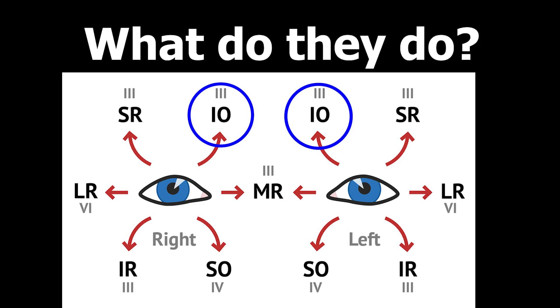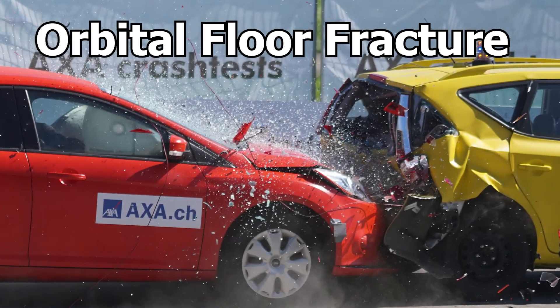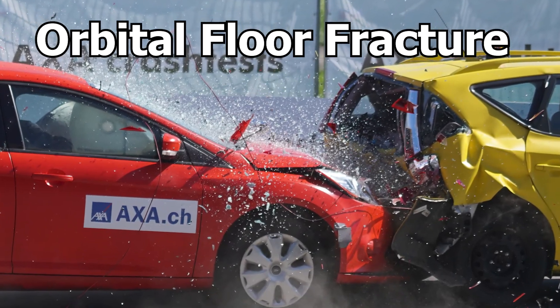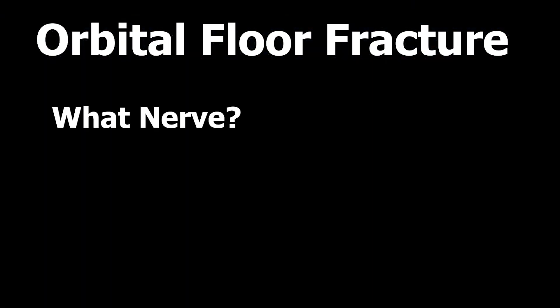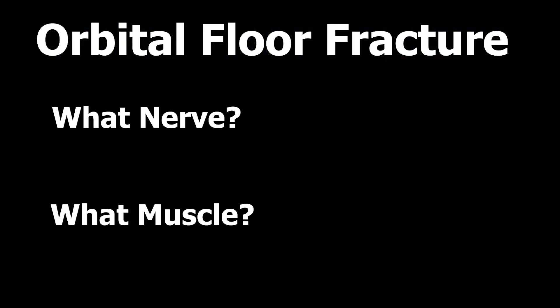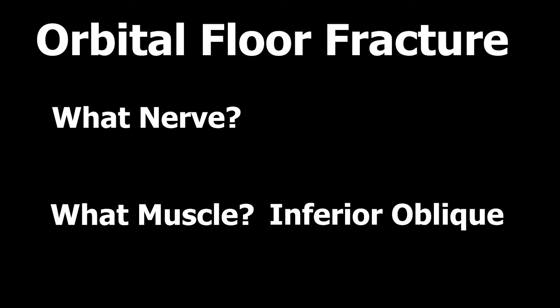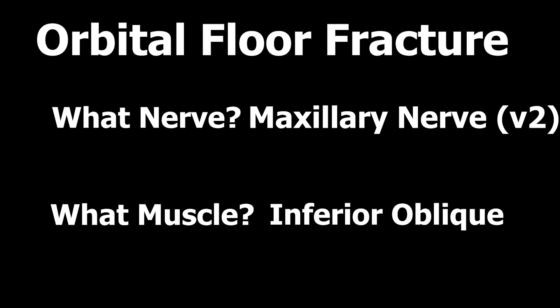You won't see a lot of pathology directly related to the ocular muscles, but there is one important thing: the orbital floor fracture. This is usually a traumatic incident — someone gets hit in the face — and what you need to know is which nerve and which muscle are involved. The answer is the inferior oblique muscle, because that's where it originates, and the maxillary nerve, V2.